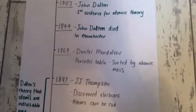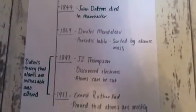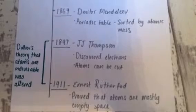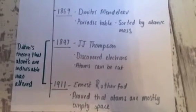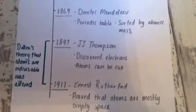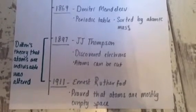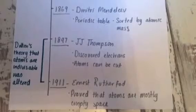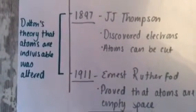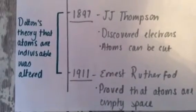In 1844, John Dalton died in Manchester where he was buried. In 1869, Dmitri Mendeleev invented the periodic table, which is sorted by atomic mass. In 1897, J.J. Thomson discovered electrons and that atoms can be split. In 1911, Ernest Rutherford proved that atoms are mostly empty space. Both of these scientists disproved Dalton's theory that atoms are indivisible, and therefore it had to be altered and reviewed.